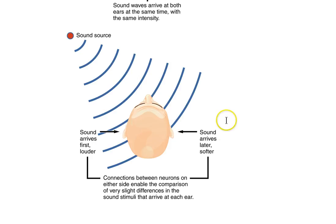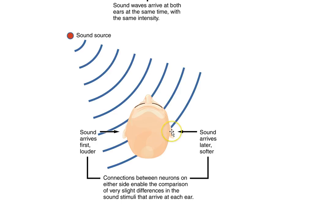How would that happen? To begin the investigation, you want to find places in the brain where the right ear information and left ear information are converging. If you're going to detect a delay in activity, you'll need to be comparing the activation from both ears — so they wanted to find a place in the auditory pathway where left and right ear information was converging.